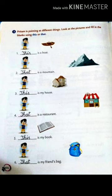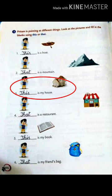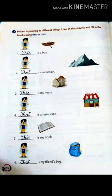Number three is: dash is my house. You will fill here 'this', because the house is near to Pritam. This is my house.